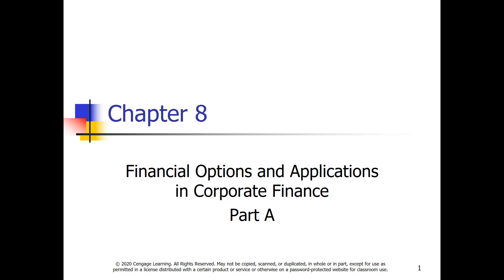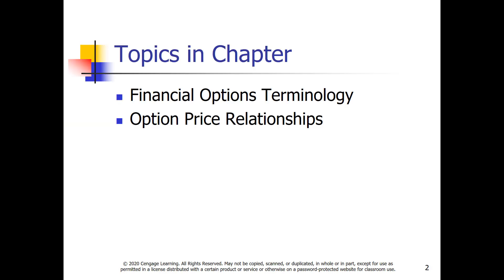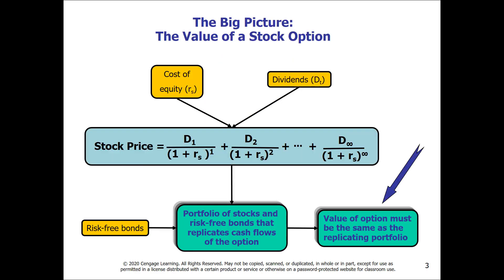Financial options are closely tied to stock, but the theory has been expanded to include applications in corporate finance. In this chapter, we'll cover the basics of option theory, valuation, and application. To begin, we need to understand the terminology and the price relationships. A stock option is a derivative security, meaning it derives its value from the underlying asset, the stock.